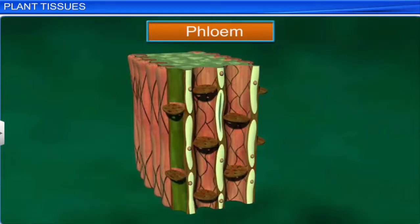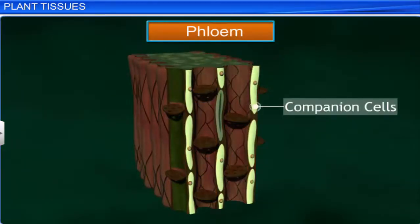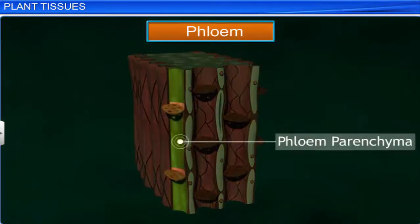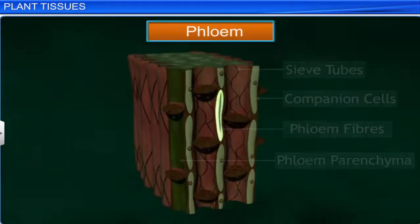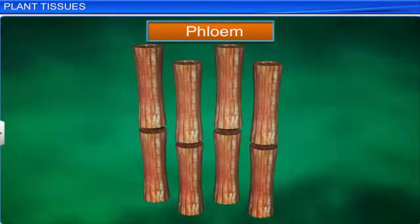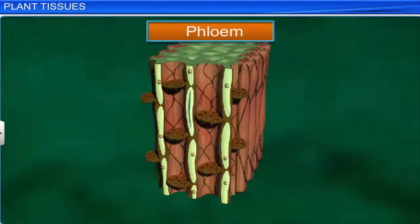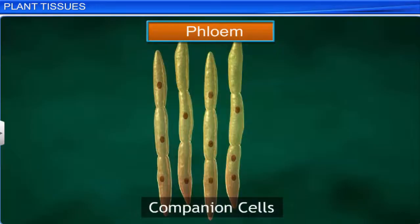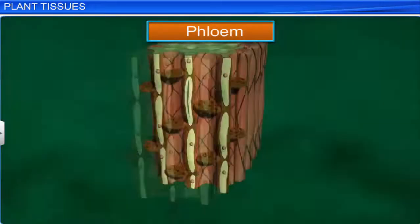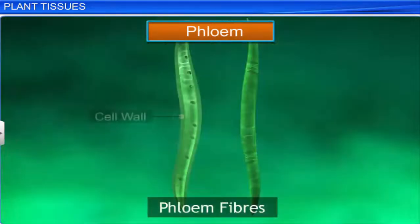The different elements of phloem include sieve tubes, which are elongated living cells with perforated walls that transport sugar or food from the leaves to the stem and roots. The companion cells are small, elongated, and help in conduction of food. Phloem fibers are thick-walled, elongated dead cells which provide mechanical support.